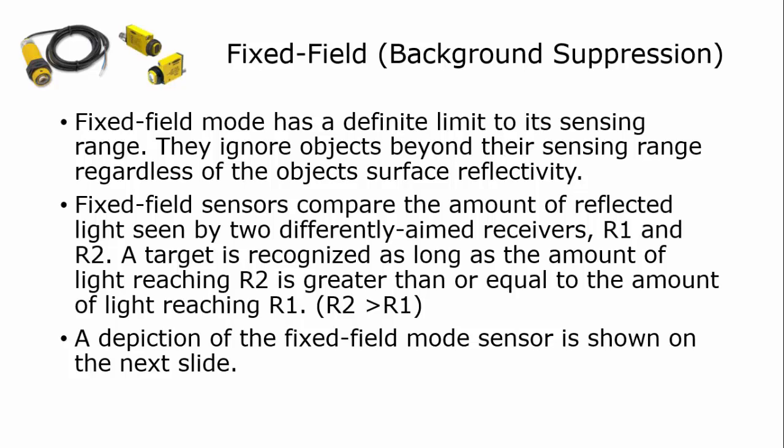Fixed field sensors compare the amount of reflected light seen by two differently aimed receivers, and we'll call them R1 and R2. A target is recognized as long as the amount of light that reaches receiver number two (R2) is greater than or equal to the amount of light reaching receiver one. So this should be actually R2 greater than or equal to R1.